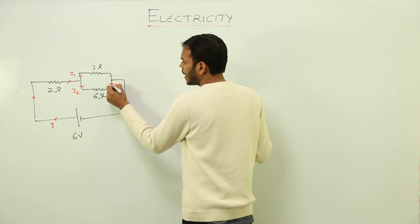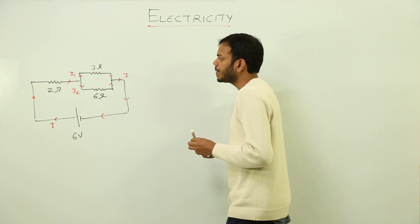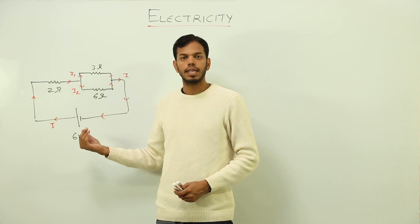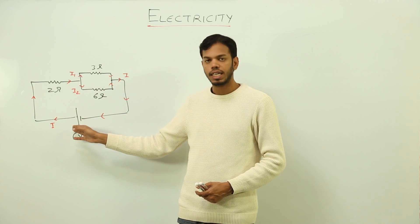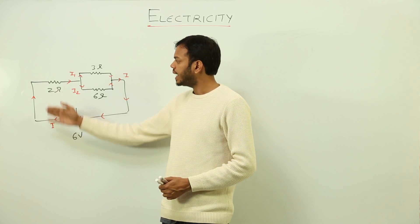Then the current will recombine to form the main current I, and the same current will come back in the circuit. This is a simple principle: whatever current leaves the circuit comes back in the circuit. Whatever current leaves this battery will come back exactly the same. So even if it is 4 amperes, it will be divided into 2 and 2, or 1 and 3.